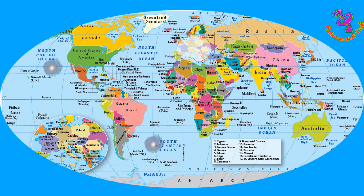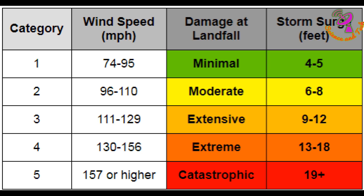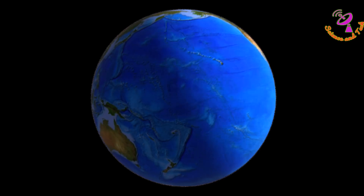Mostly, tropical cyclones will form at the Atlantic Ocean and the North Pacific Ocean. The causes of cyclones can be concluded by the following factors: the speed of wind swirling, and the speed of the storm rising up from the ocean.